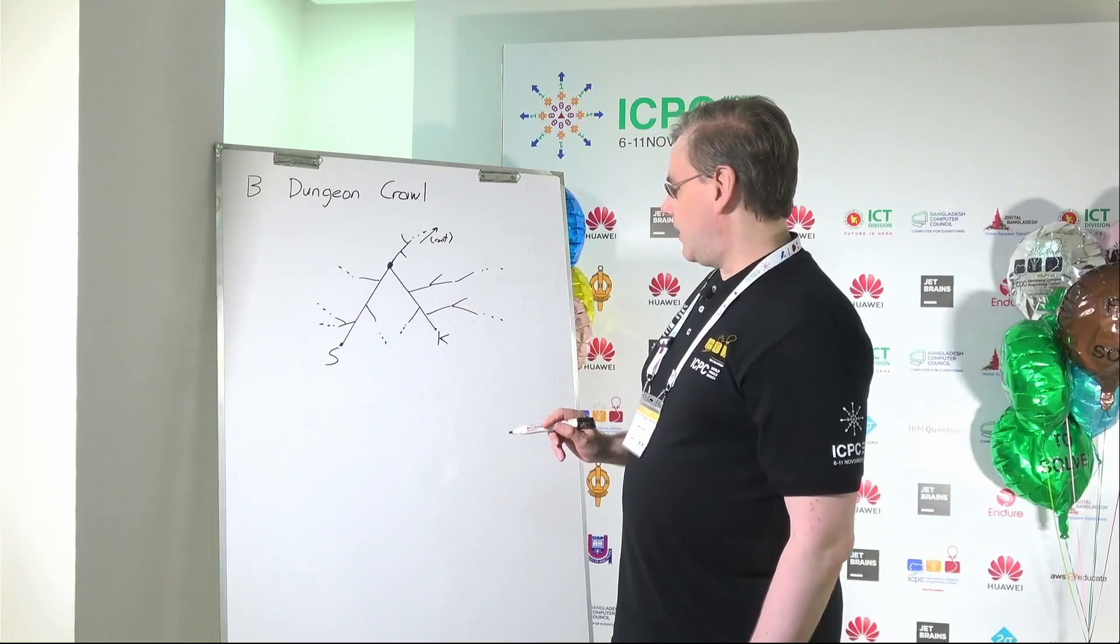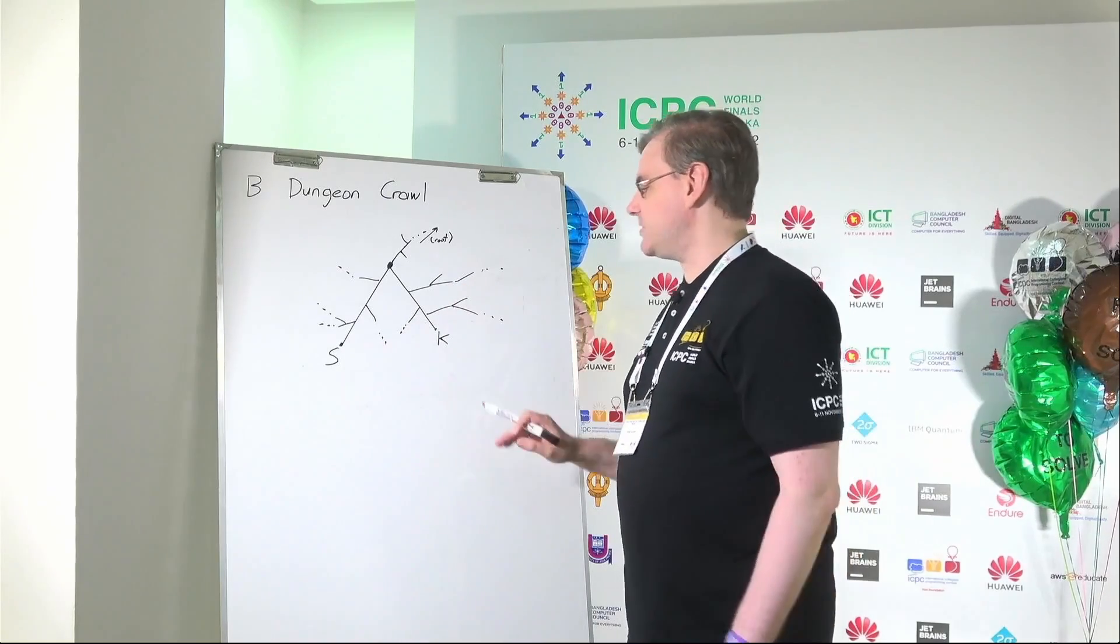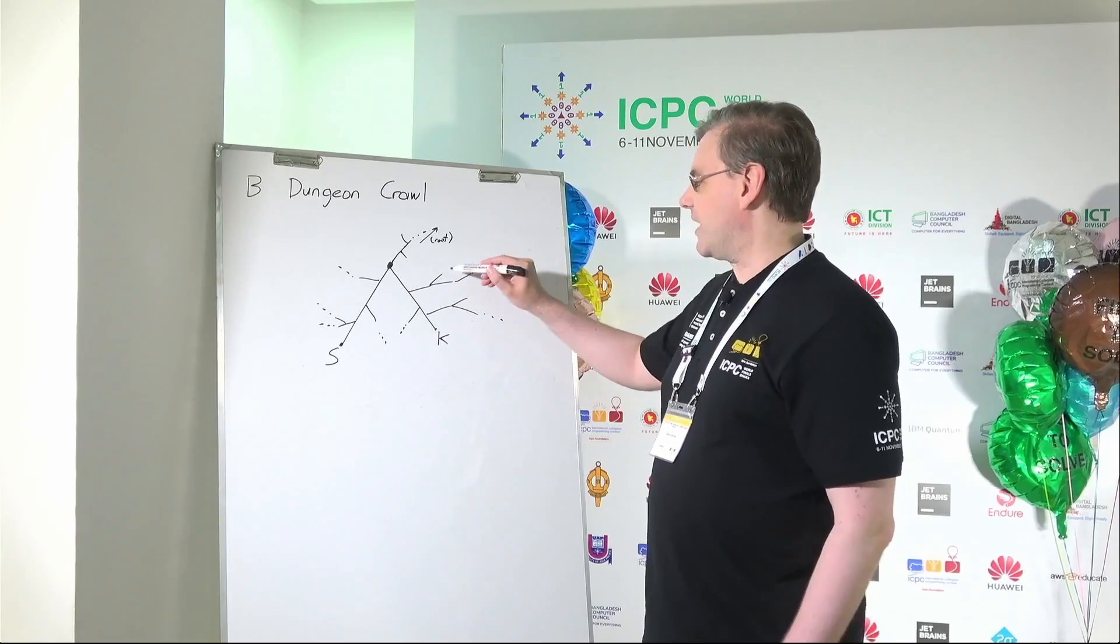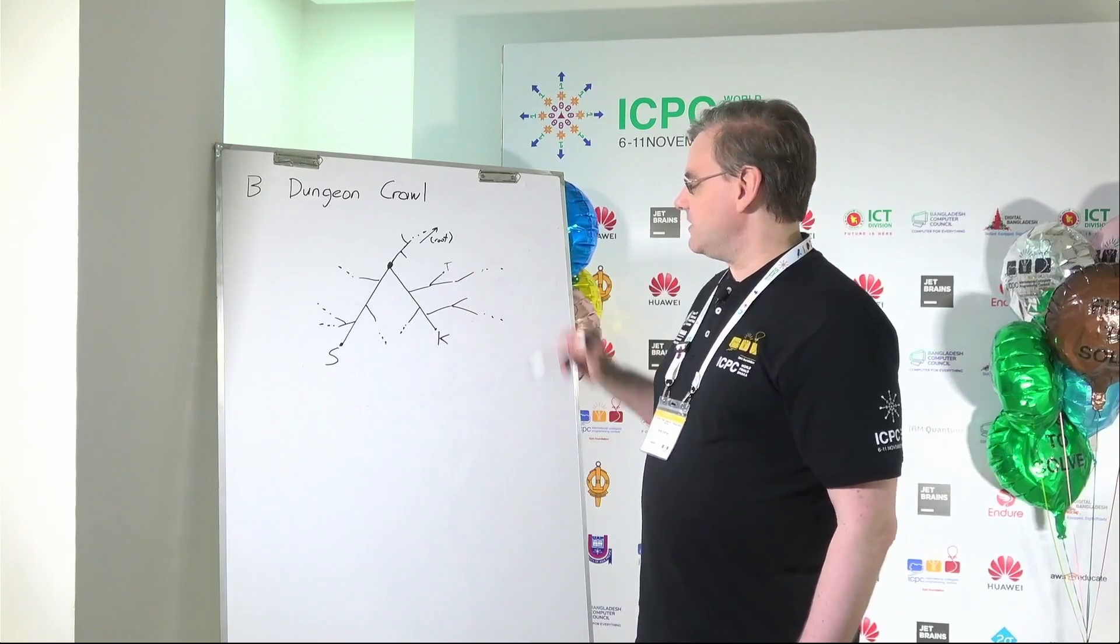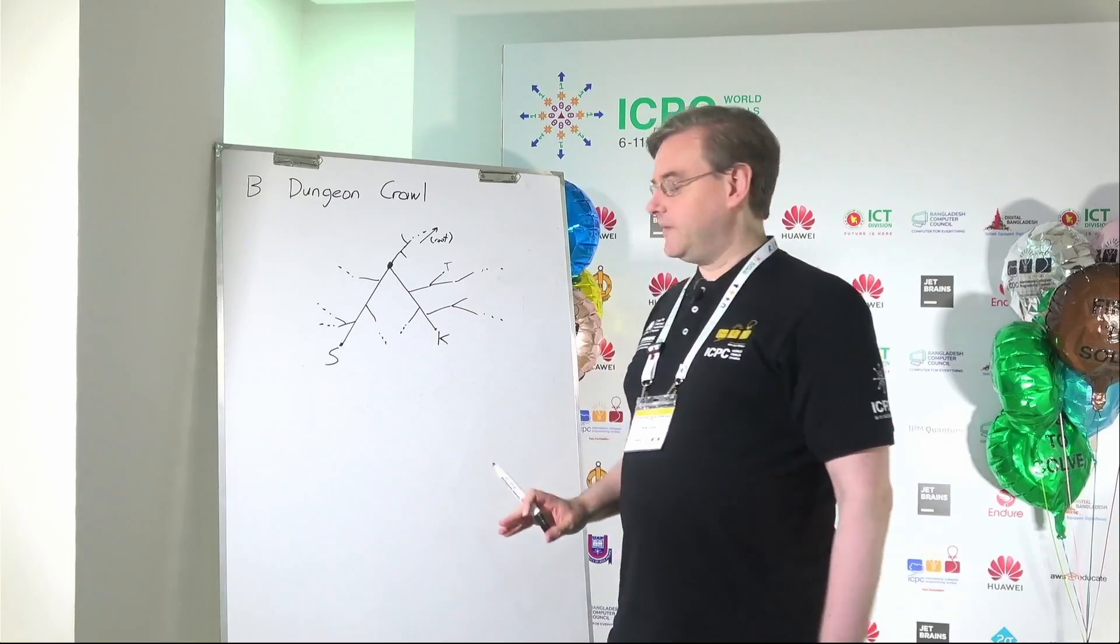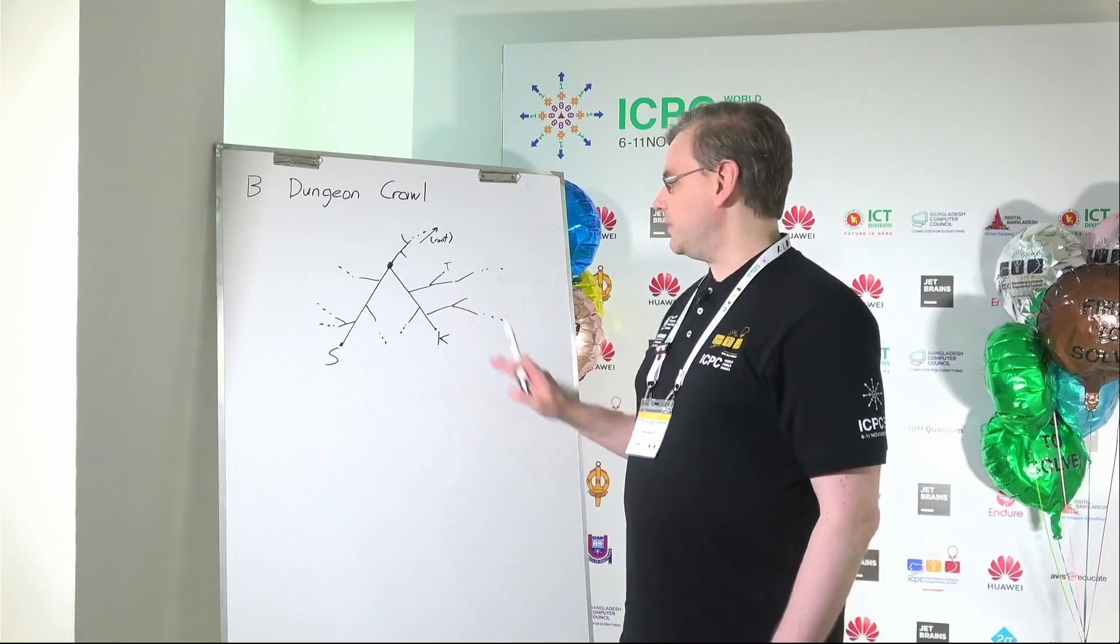And you have several special rooms in this tree. You have a starting room, you have a key room, and then somewhere there's also a trap room. And you are expected to explore this maze fully, which means you want to visit every room in the maze.